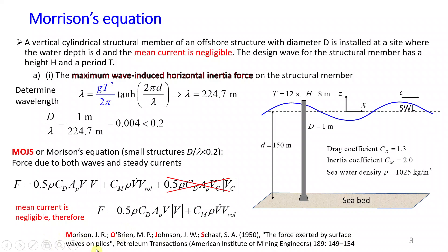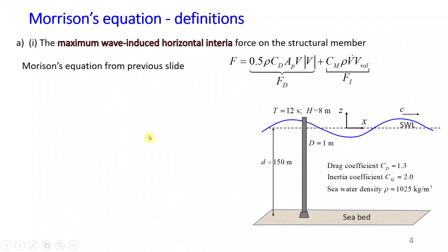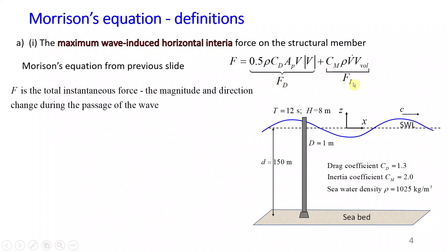Morrison's equation is quite often defined by the abbreviation 'MOJS', which are the first letters of each author's name. To calculate the maximum wave-induced horizontal inertia force, I will start with the definition of each term in the simplified version of Morrison's equation. On the left-hand side we have F, the total instantaneous force. On the right-hand side we have the instantaneous drag force and instantaneous inertia force.